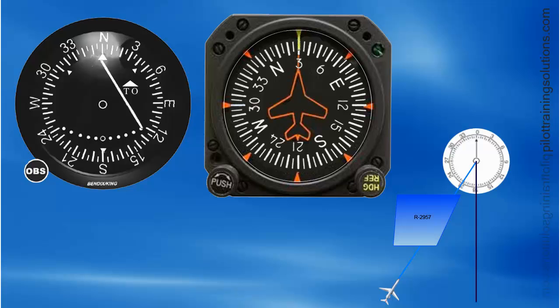How do we easily identify the 45-degree angle of intercept — the heading we need to fly to intercept that radial? It's actually extremely simple. If you look at the VOR receiver, you will notice that there is a small triangle on each side of the instrument, as highlighted by the animations. If you count the degrees from the top to the triangles, they are exactly 45. So the triangles are pointing to the 45-degree intercept angles — in this case, 045 and 315, as shown by the animation.